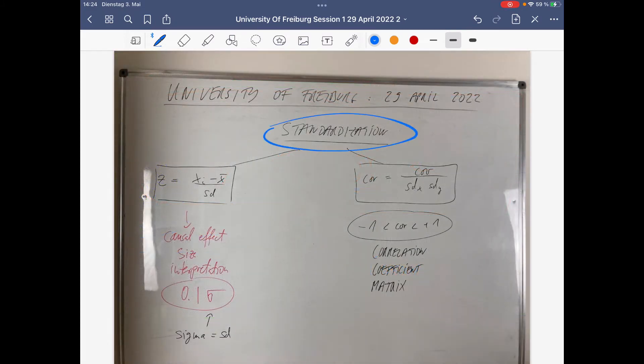Standardization is quite important. You standardize deviations from the mean by the standard deviation to get the z-value. For causal effects, you typically measure these causal effects as a part of a standard deviation sigma. Sigma is nothing else than the standard deviation sd. Here we standardize the covariance.